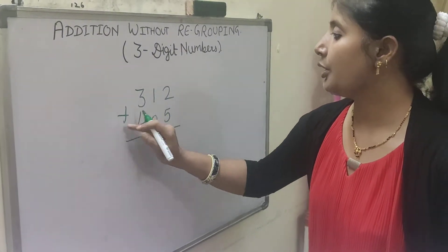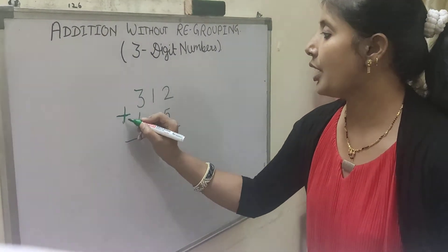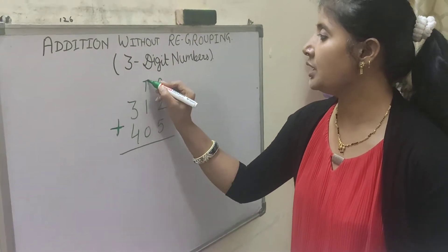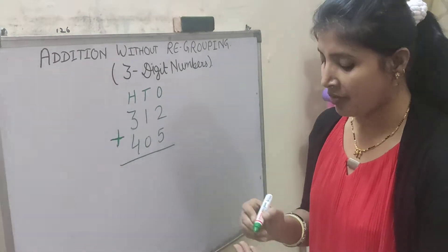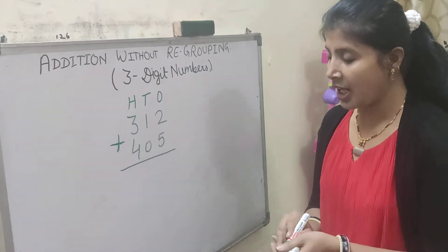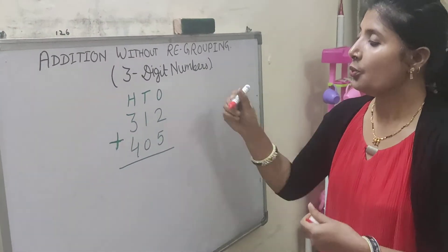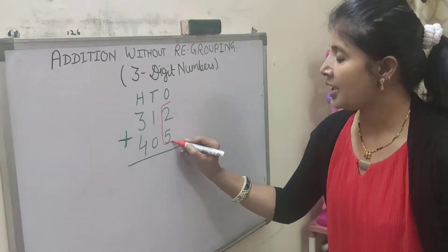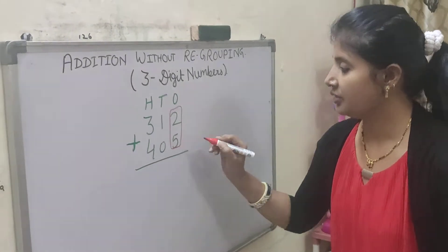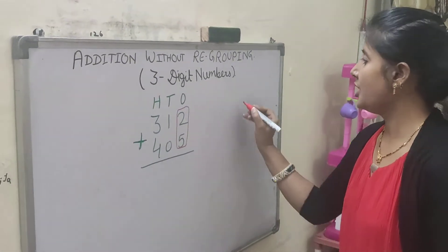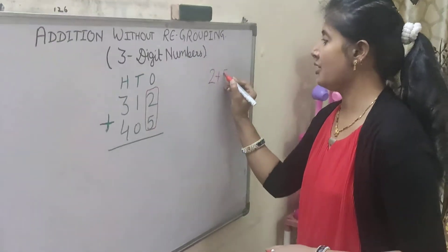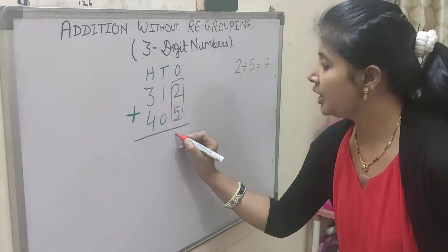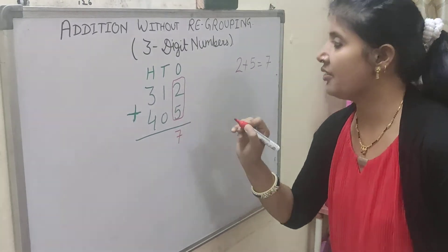Now write the place values here: the 1s, 10s, and 100. We have to start from the 1s place digit. Here we have to add these 2 digits first. That is 2 plus 5 is equal to 7. So below this 1s place digit we get 7.